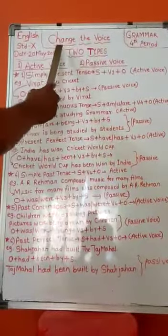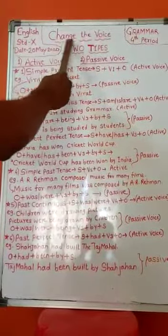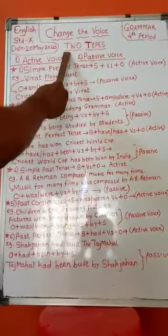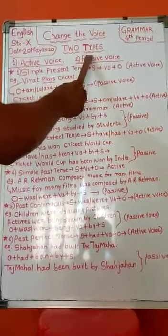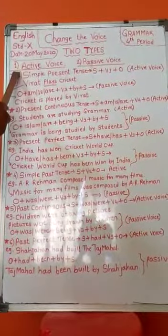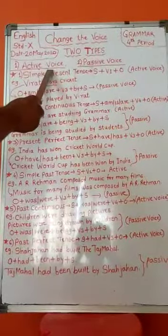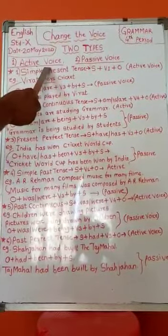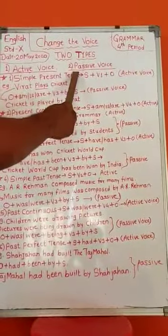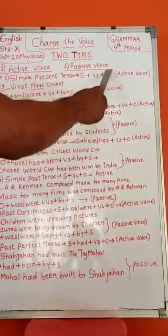Good morning students. Today in grammar session we are going to study change the voice. There are two types of voice in English. First type is active voice — active voice gives importance to the action doer, that is the subject. Second type is passive voice — passive voice gives importance to the object in the sentence.